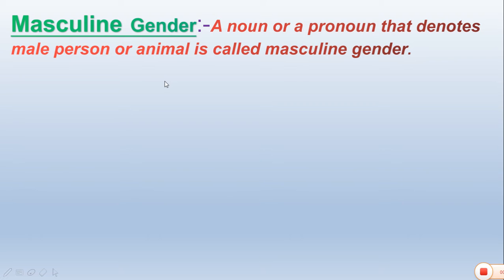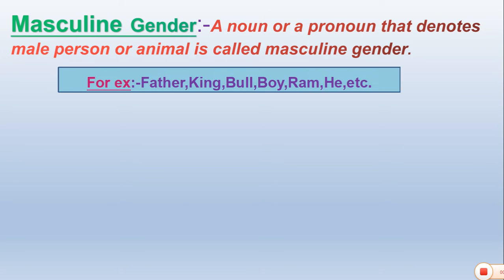Now we are going to talk about masculine gender. A noun or a pronoun that denotes a male person or animal is called masculine gender. For example: father, king, bull, boy, ram, he, etc.